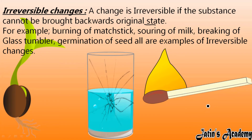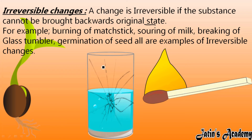I cannot convert the burnt matchstick into a new matchstick. When I am not able to convert the changed thing back into its initial state, those are known as irreversible changes. For example, if this glass breaks by mistake, I cannot convert the broken glass back into its original shape — those are irreversible changes.